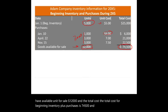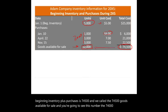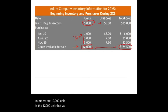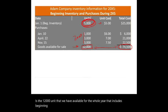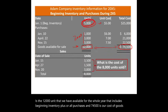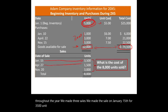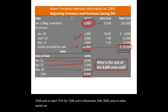The total cost of beginning inventory plus purchases is $74,500 — this is called goods available for sale. You'll see $74,500 and 12,000 units repeatedly throughout this recording. Throughout the year, three sales were made: January 15th — 3,500 units; April 27th — 1,500 units; November 20th — 3,000 units. In total, 8,000 units were sold out of the 12,000 available.